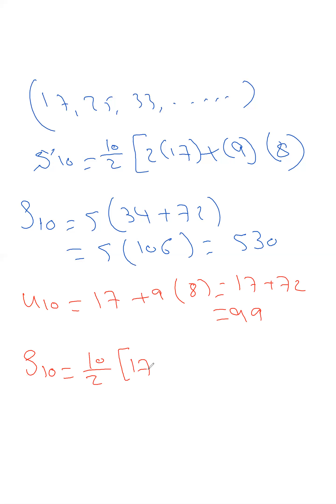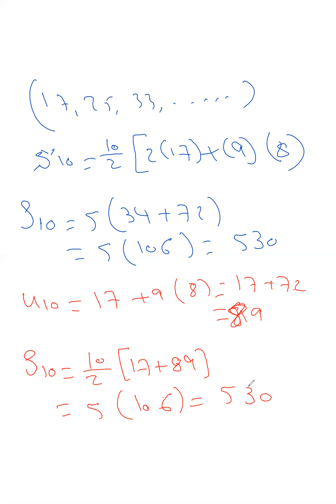So the sum using the second rule will be 10 over 2 times u_1 plus u_10, which is 10 over 2 times 17 plus 89, equals 5 times 106, equals 530. In the second rule, you must find both u_1 and the last term. Here the last term is u_10 because you need S_10.